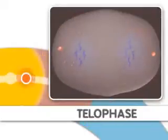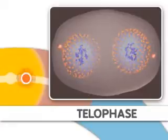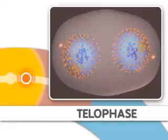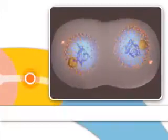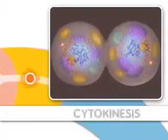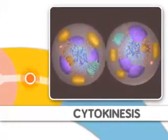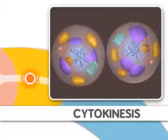Finally, during telophase, nuclear membranes reappear around the two sets of chromosomes, and mitosis is now complete. After mitosis, two new cells are formed by a process called cytokinesis.